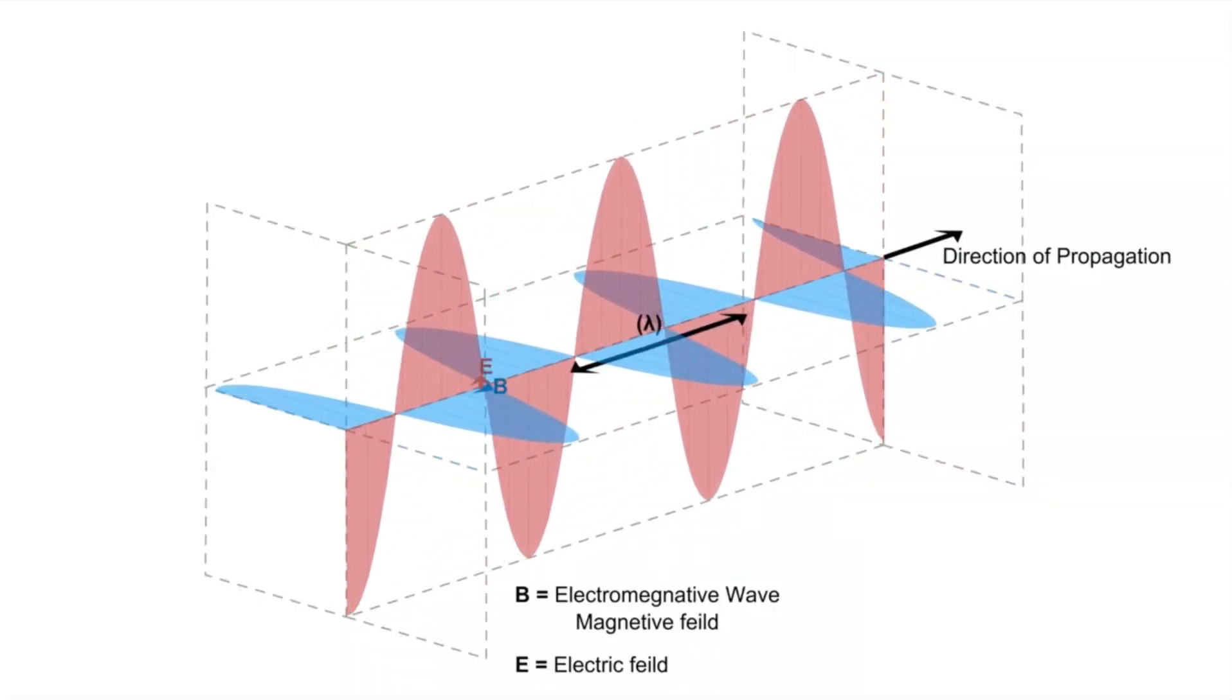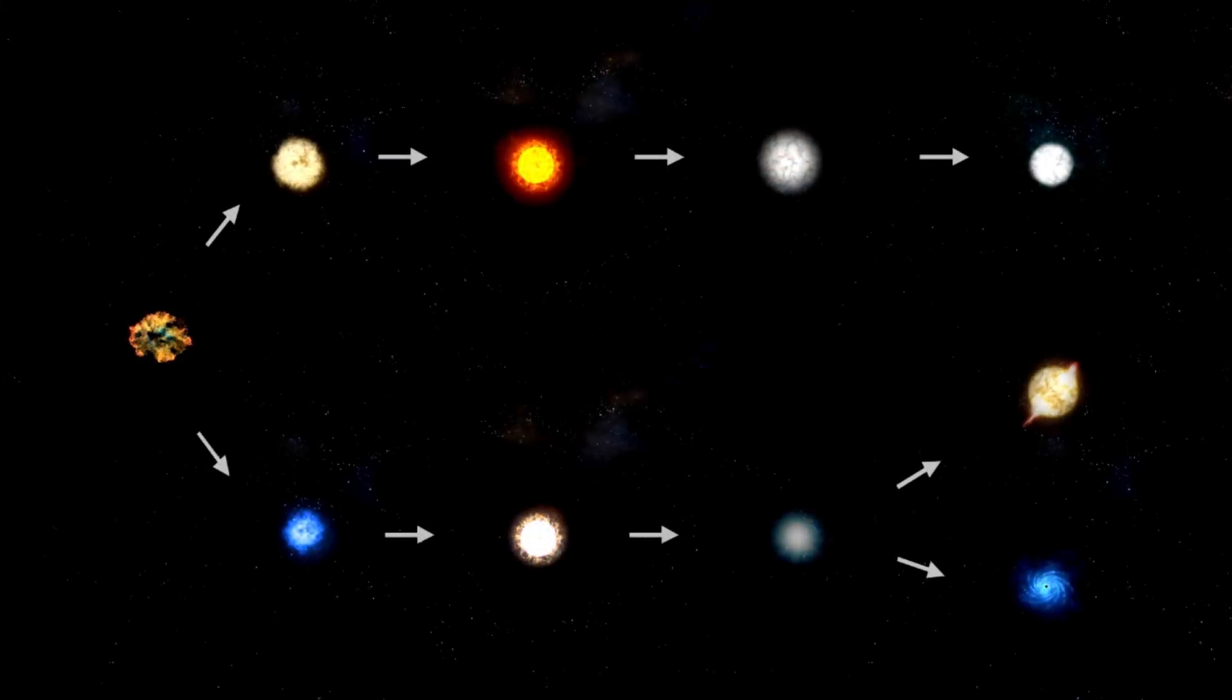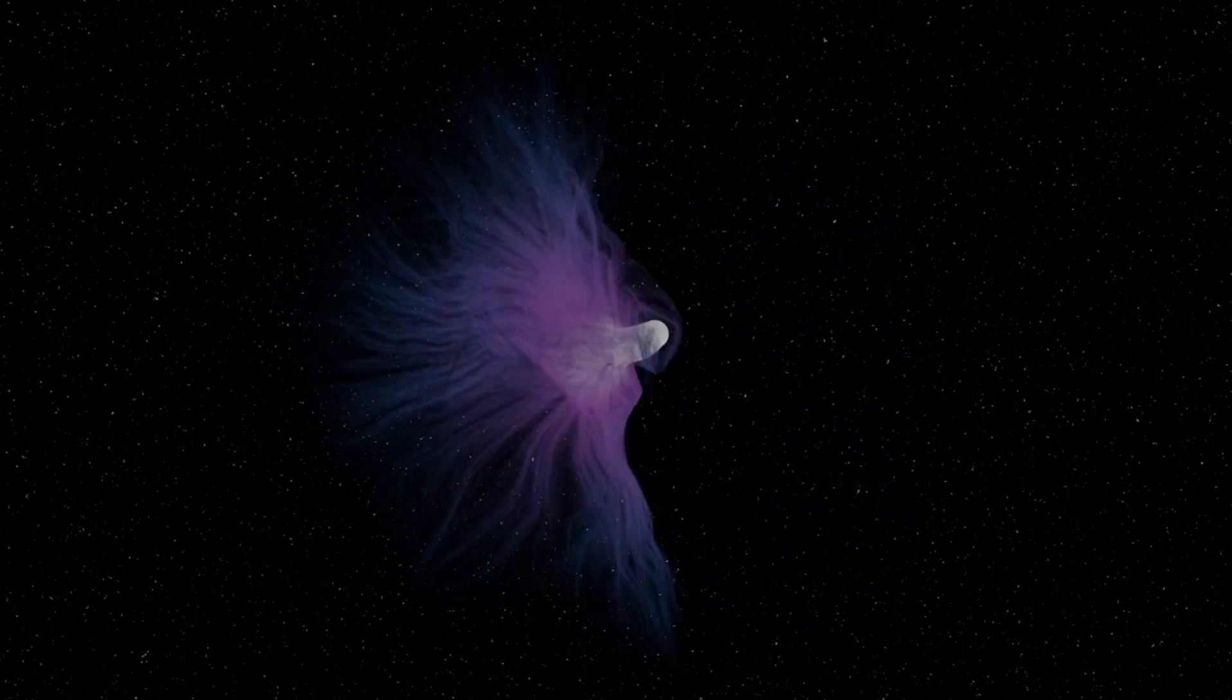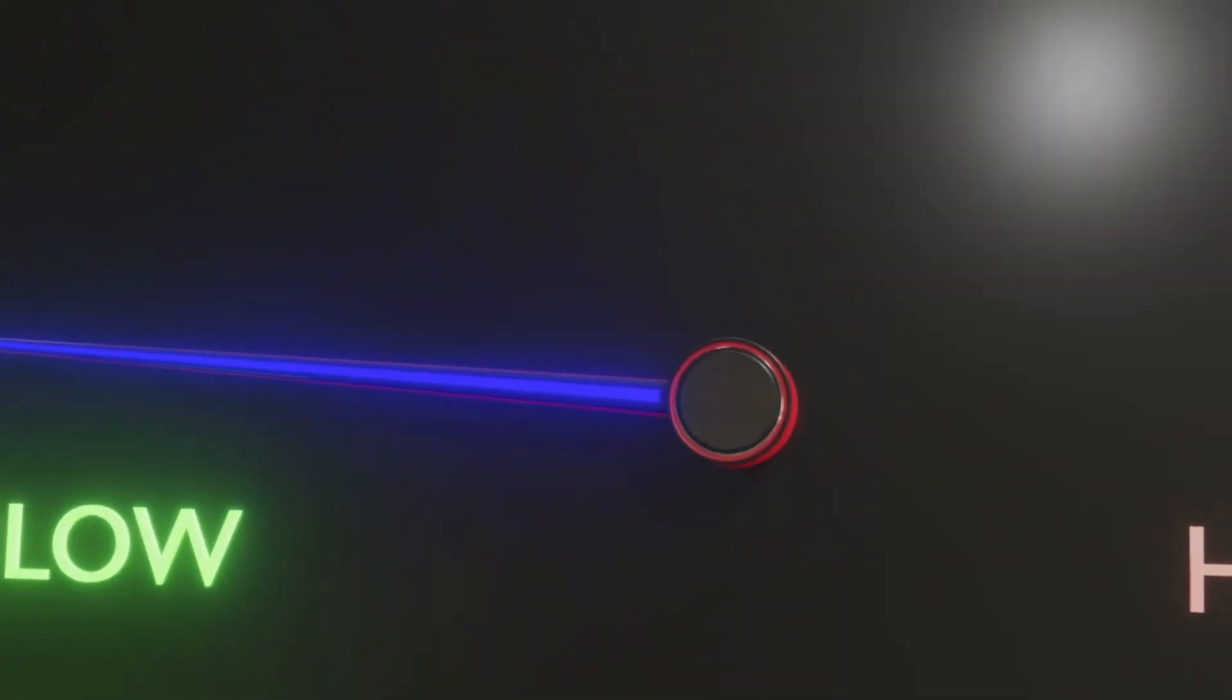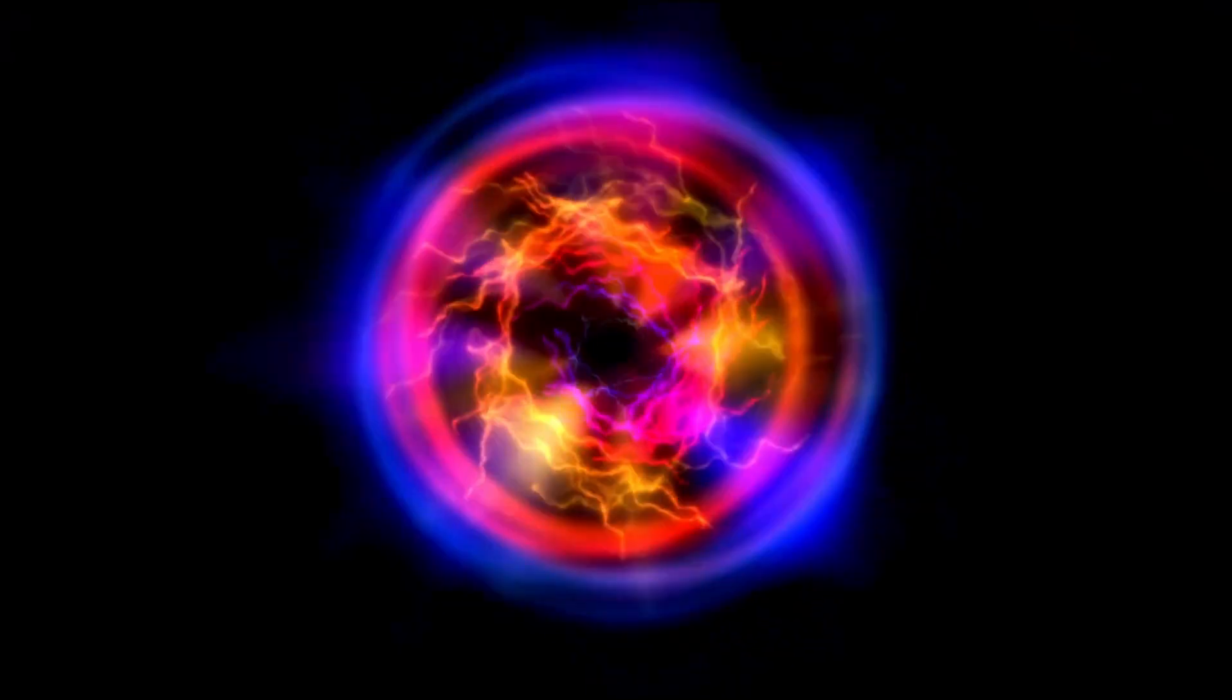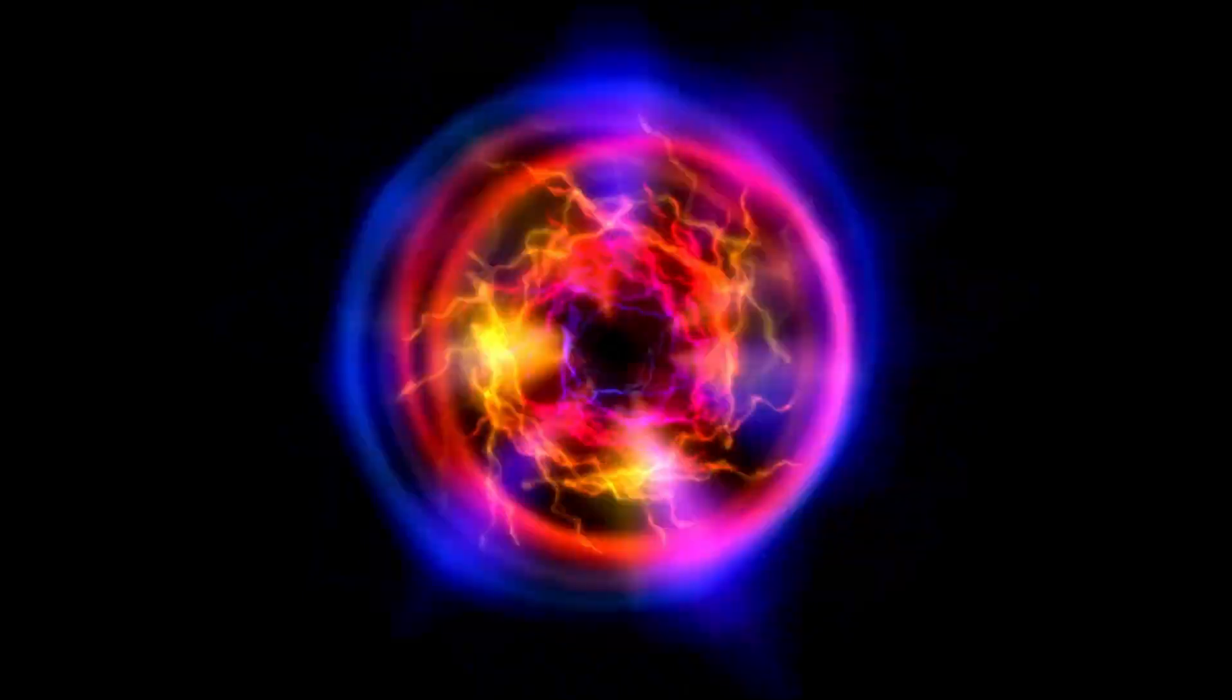In the case of Betelgeuse, a red supergiant nearing the end of its life cycle, this balance has become increasingly unstable. As the star depletes its core hydrogen fuel, the nuclear fusion processes that sustain it undergo significant changes. When hydrogen fusion slows in the core, radiation pressure decreases, causing the gravitational pull to momentarily gain the upper hand. This results in the contraction of the star's outer layers.